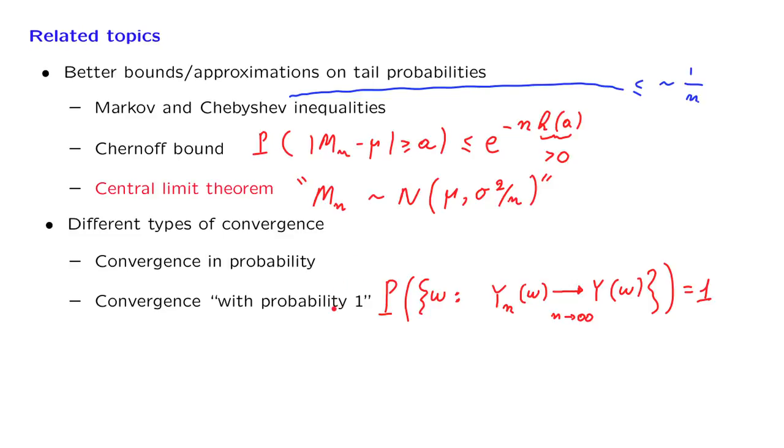Let me just say that this is a stronger notion of convergence. If you have convergence with probability 1, you also get convergence in probability. And it turns out that the law of large numbers also holds under this stronger notion of convergence.